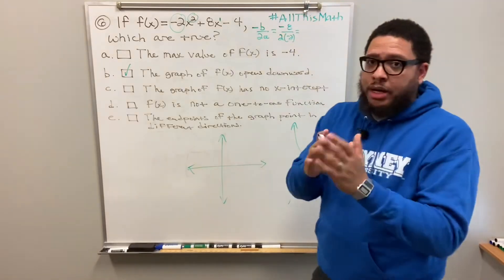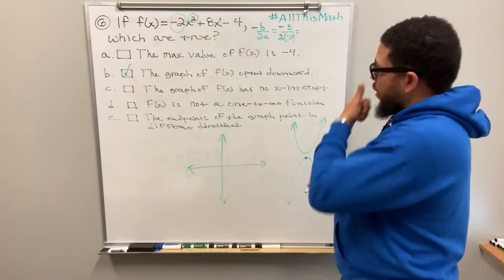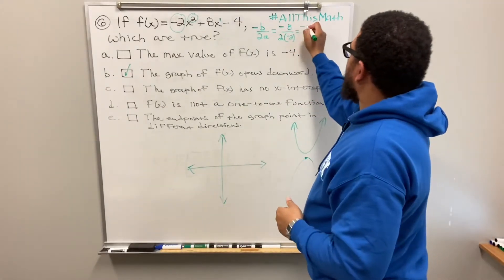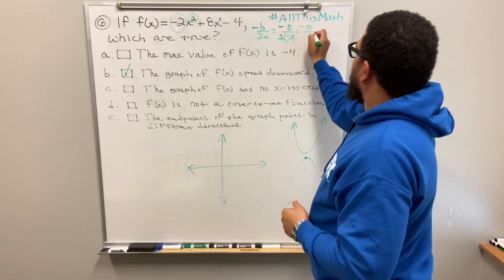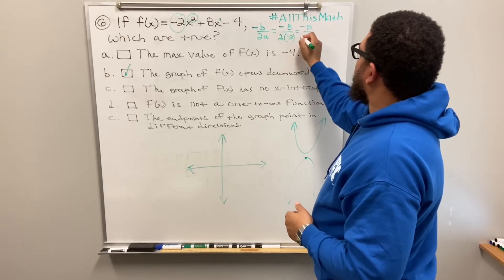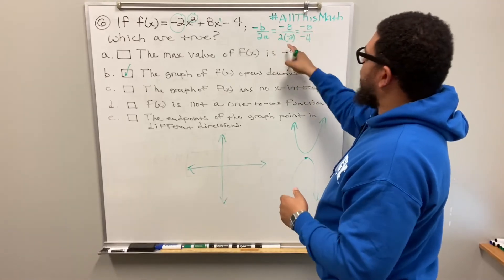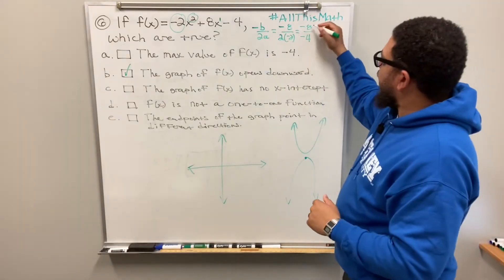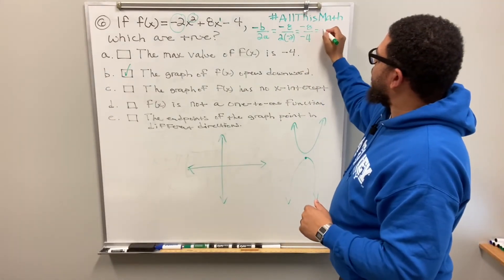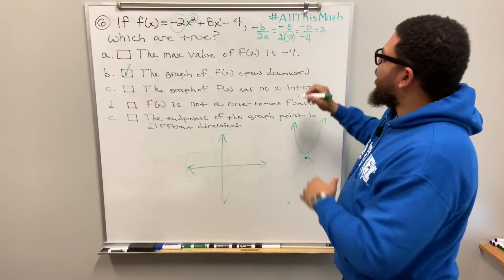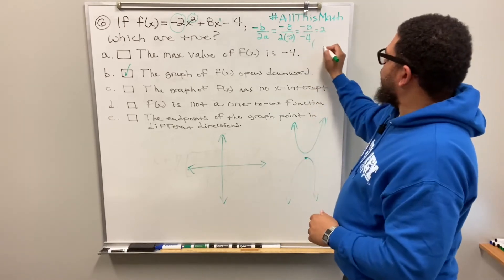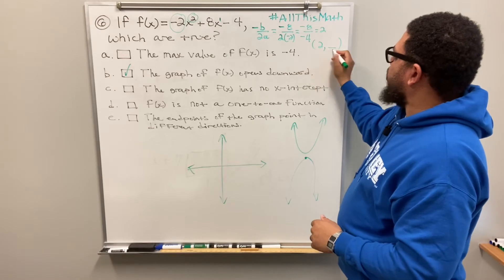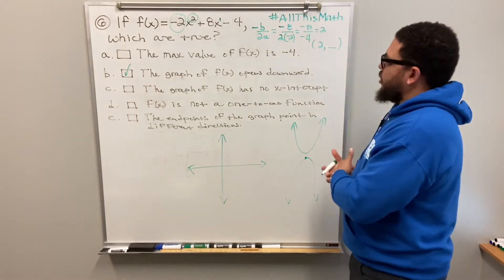Plugging into the formula: negative b is negative eight, and 2a is two times negative two, which is negative four. So I have negative eight divided by negative four, which equals positive two. That gives me the x-value of the vertex: x equals two.